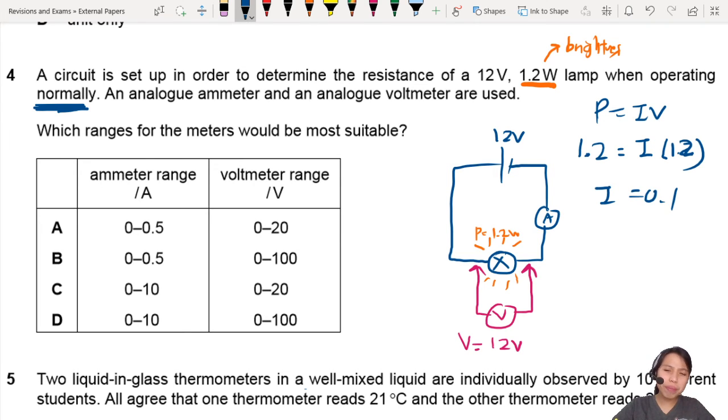If you look at the answer, 10 ampere is really big for a lamp. I can probably cancel that already, but now it kind of confirms my range is about 0.1, so this is fine.